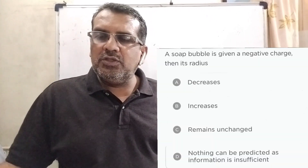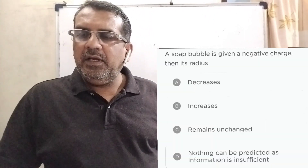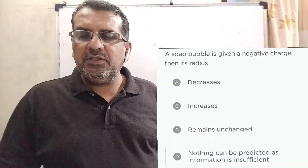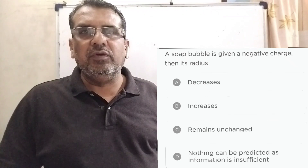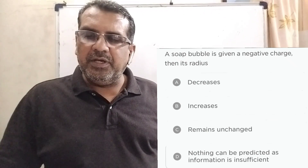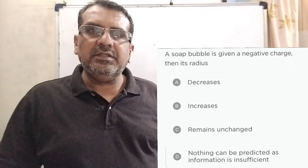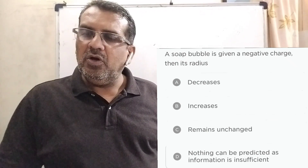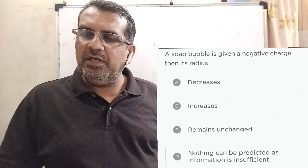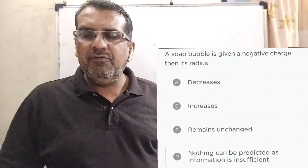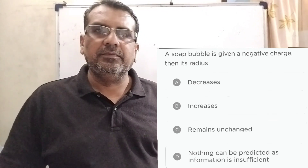Now, here is the question. A soap bubble is given a negative charge — its radius will be: option A increase, option B decrease, option C remain unchanged, option D fluctuate.